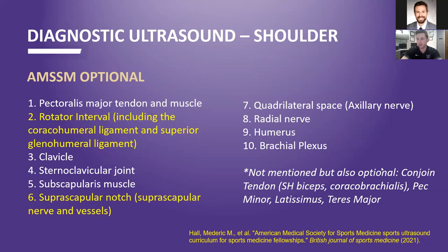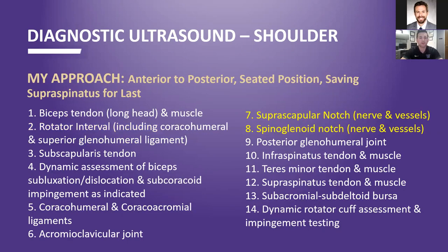Two of these things weren't in the AIUM complete protocols before — the dynamic assessment of the biceps and subcoracoid impingement were really optional for the AIUM, and the coracoacromial ligament wasn't included. Some of the optional things for the AMSM protocol are the pectoralis, rotator cuff interval, and sternoclavicular joint. We will touch on a few of them because with the differential I had in mind, I want to make sure I do as thorough an assessment as I can of the rotator cuff. We're going to look at the rotator interval and the suprascapular notch because of the labral tear concern. My approach is to go from anterior to posterior, up and over the shoulder in a seated position, always saving the supraspinatus for last because it tends to have the most pathology.